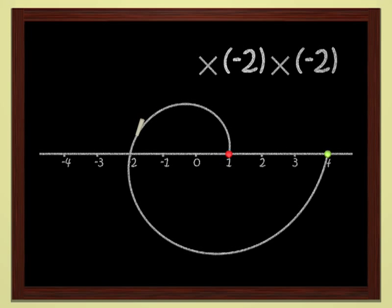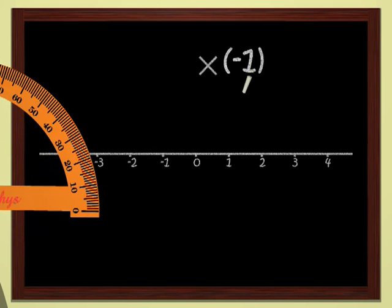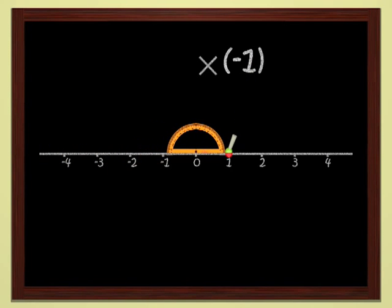If we multiply twice by minus two, we have multiplied by four. Multiplying by minus one is very easy.